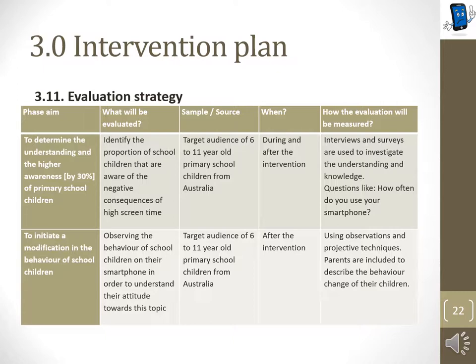We ask questions like: How often do you use your smartphone? Why do you use your smartphone? Do you think you should reduce your screen time? Lastly, we would like to create a behavioural change. Qualitative methods are used to determine this — observations are conducted at schools to see how children behave, and projective techniques are used to get to know their attitudes towards smartphone use. Furthermore, parents are involved as they can describe the change of behaviour of their children well.